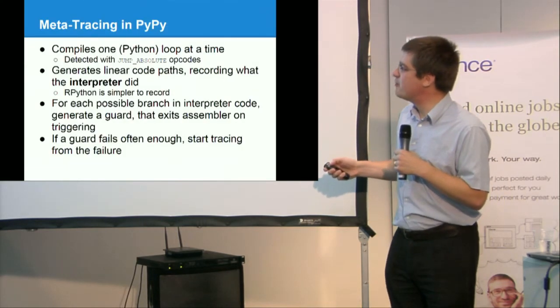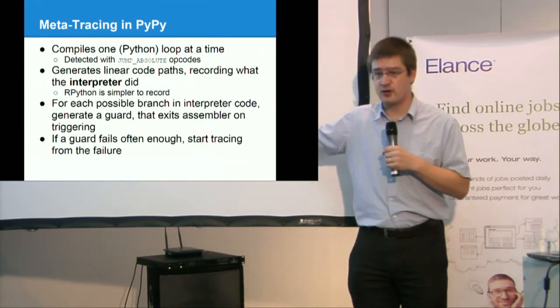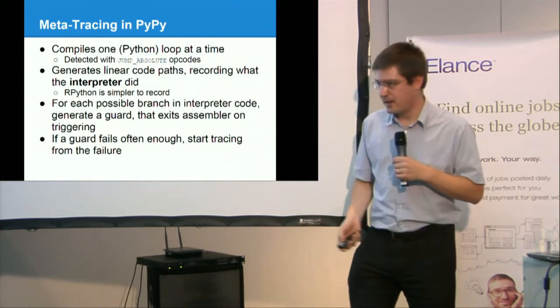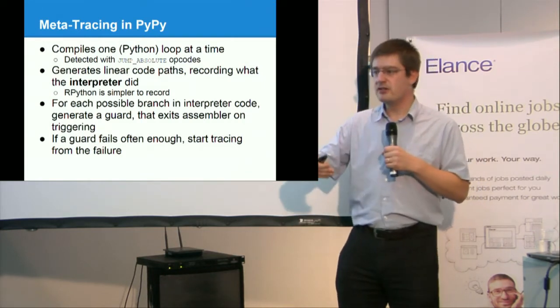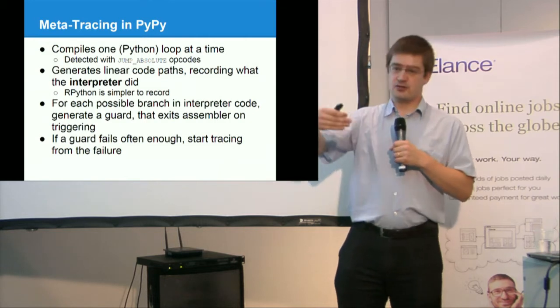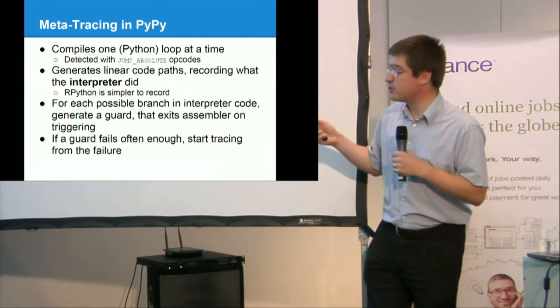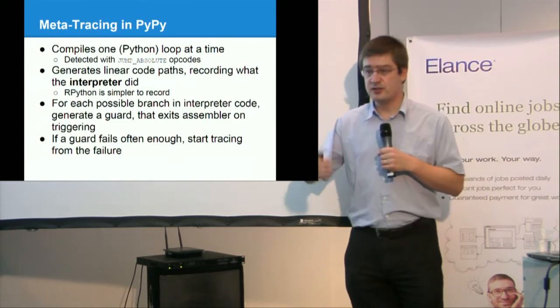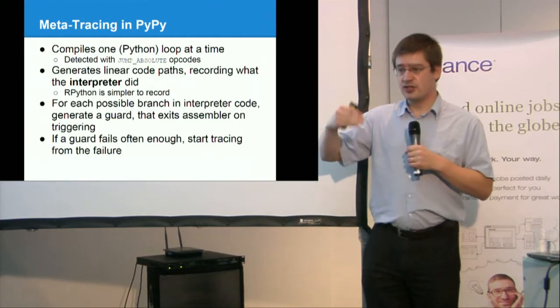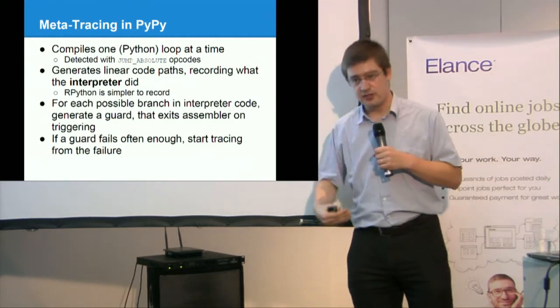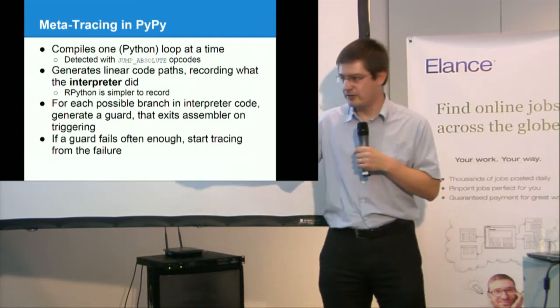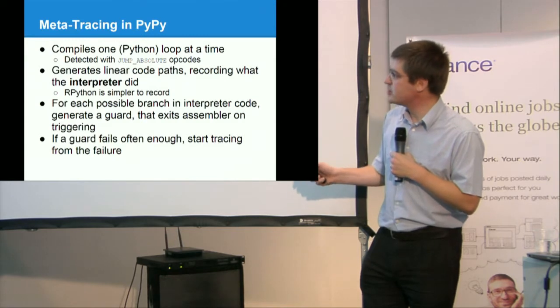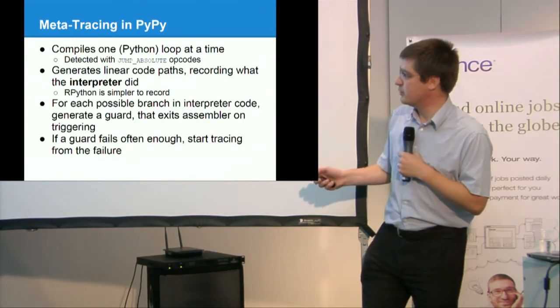Then, for each possible branch in interpreter code. Of course, the interpreter code contains a lot of conditions. For example, if my addition didn't overflow, then I continue normally. This is typical. So for each possible branch that you have in your interpreter, you generate a guard. A guard, it is just a check. I check, is the condition true? If it's true, continue. If it's not, exit and go back to the standard interpreter.